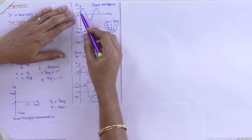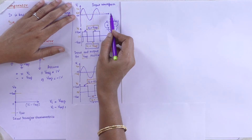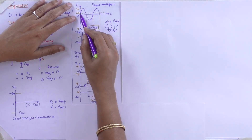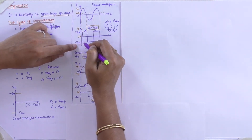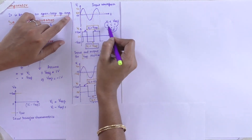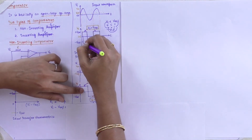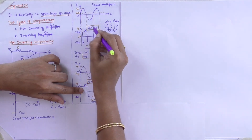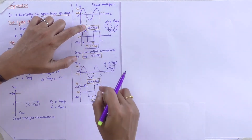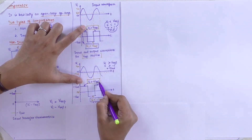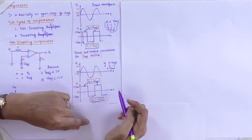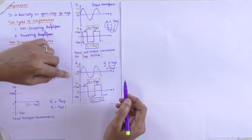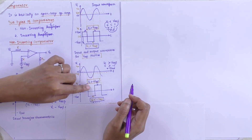In the top case, with positive reference, VI is 0 and reference is 1 — it starts with minus V saturation, since 0 is less than 1 (VI less than V reference). In the top cycle, VI is greater than V reference. Compare: VI greater than minus V reference and VI less than minus V reference. When V reference is negative, it starts with plus V saturation. When V reference is positive, it starts from minus V saturation.